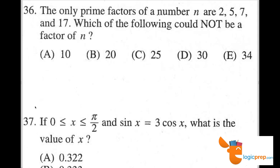So number 36. The only prime factors of a number n are 2, 5, 7, and 17. Which of the following could not be a factor of n?